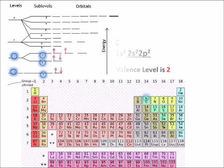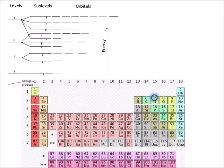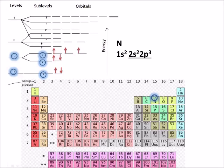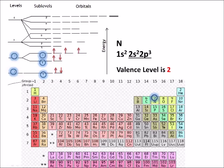Nitrogen has seven protons in the nucleus and therefore seven electrons. In the ground state, the electron configuration is 1s2 2s2 2p3. The valence level is the second energy level. That's what places nitrogen in the second period of the periodic table — in the second period, the second energy level is filling. The second energy level will be completely filled with neon.